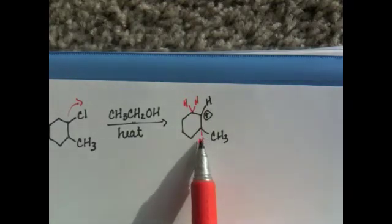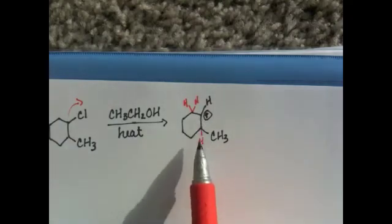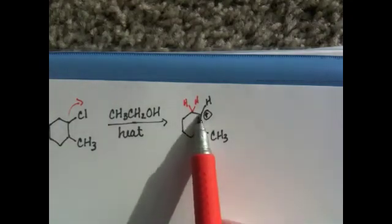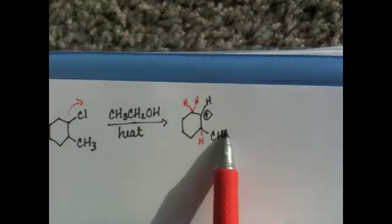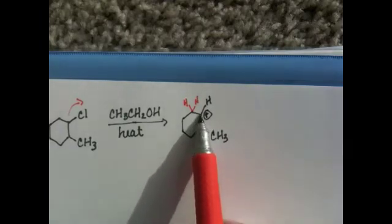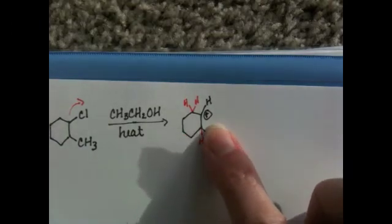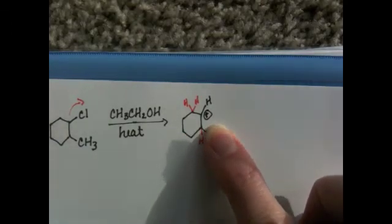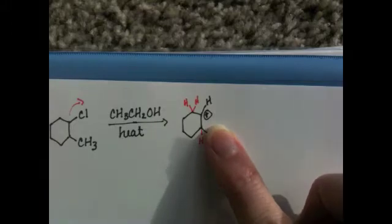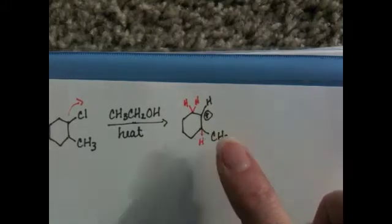Down here you've got a hydrogen that you could shift up to that spot. You also have a methyl group that you could shift up to that spot. If you shifted the methyl group up into this position, your positive charge would be down here. That would be a secondary carbocation. No improvement to the stability of the intermediate, so it's not going to do that.